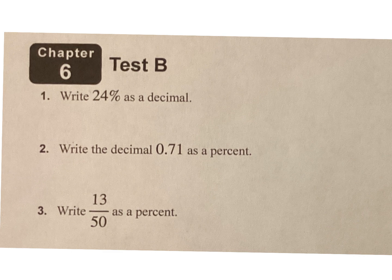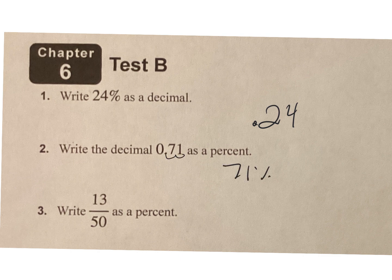Number 1: write 24% as a decimal. All you've got to do is take where the decimal point is and move it over 2, so you're going to end up with 0.24. Write the decimal 0.71 as a percent — you just take it over 2, and you get 71%.